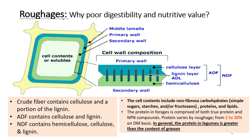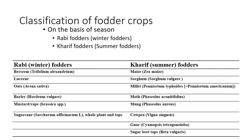There are different techniques which can be used to improve the nutritive value of roughages, particularly low-quality roughages. From a ruminant point of view, fodder crops in Pakistan are divided into two categories based on season. Rabi fodders are sown during winter and are also known as winter fodders; these include berseem, lucerne, oat, barley, mustard, rape, and sugarcane. Kharif fodders are the summer fodders sown during the Kharif season; these include maize — the majority of area in Punjab, Sindh, and KPK is under maize cultivation — sorghum, millet, moong, cowpea, guar, and sugar beet tops.